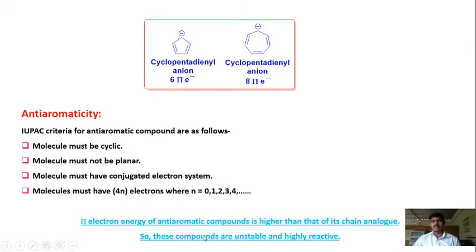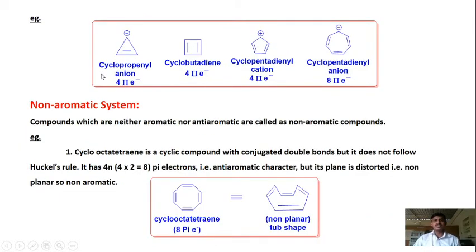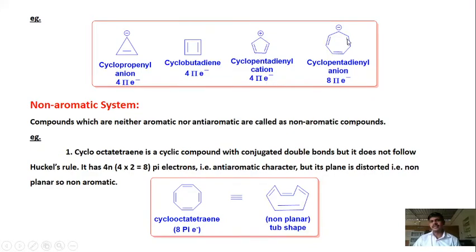Examples of anti-aromatic compounds: cyclopropenyl anion is not planar and has a negative charge contributing two electrons, with two double bonds giving four pi electrons total — 4×1 = 4, following the 4N rule. Cyclopentadienyl cation has 2 + 2 = four pi electrons. Cyclooctatetraenyl anion has eight electrons — 4×2 = 8 pi electrons. So these are examples of anti-aromatic compounds.